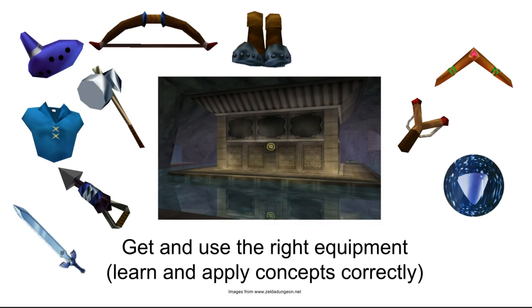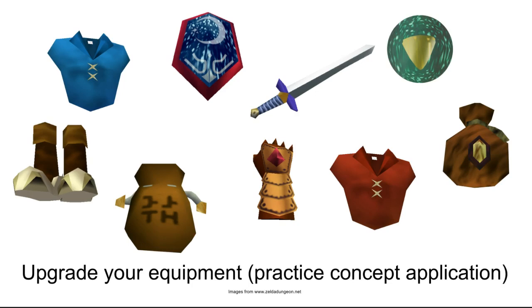There's also equipment that looks like it might be related and you might be on the right track, but it's just not as useful as the items you're supposed to use in that dungeon. The silver scale lets you dive underwater, but if you think about the equipment you actually need, you have items that let you swim around underwater as long as you want, so your dive ability really isn't that important anymore. This is like using a related concept that just doesn't fit quite right. Make sure you're using the right equipment for the job. And while you're at it, upgrade your equipment — practice your concept application. Sometimes those upgrades are actually necessary; that mirror shield on top, you need that to beat the game.